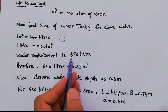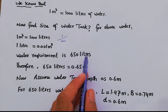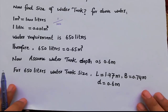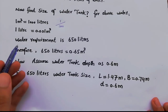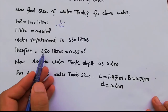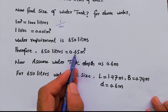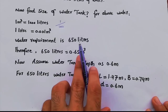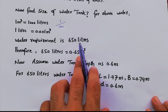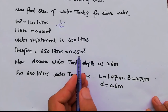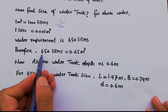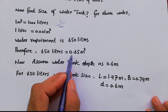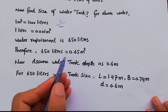Our water requirement is 650 liters. Therefore, 650 liters equals 0.65 cubic meters. So if we have a water tank volume of 0.65 m³, it can hold 650 liters of water. We now need to find the physical dimensions of the tank from this volume.